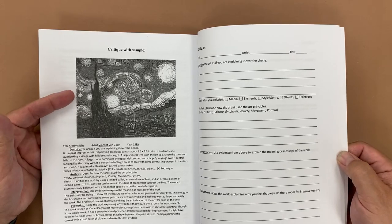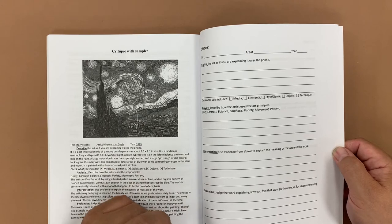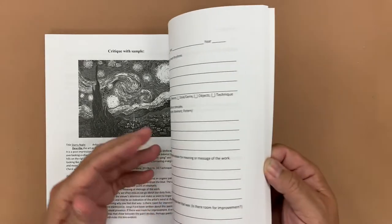Later on we have critiquing pages where they would describe, analyze, interpret, and evaluate famous works of art or work of each other's peers.